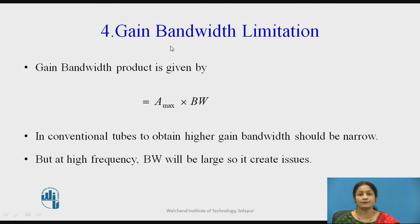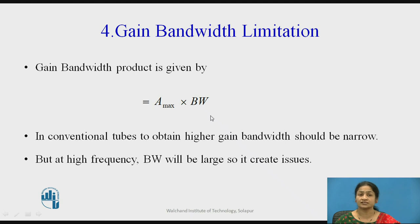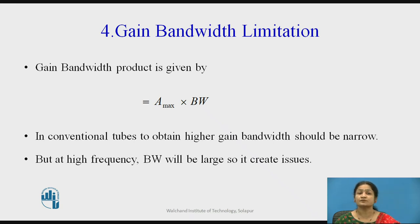The next effect is the gain bandwidth limitation. The gain bandwidth product is given by A_max × bandwidth = constant C. As frequency increases, bandwidth increases, and since their product is constant, the gain A_max must decrease. This creates a significant issue at high frequencies.